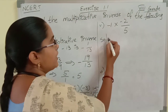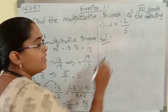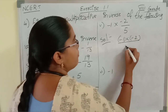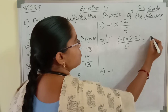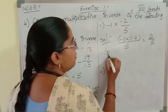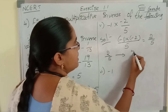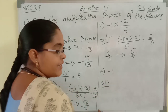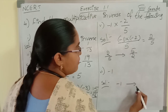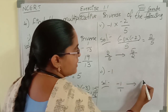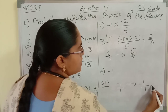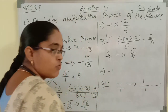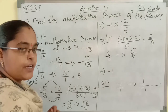Now see the next one: multiply minus 1 and minus 2 by 5. Minus into minus gives plus 2 by 5. The multiplicative inverse of 2 by 5 is 5 by 2. See the last one: the multiplicative inverse of minus 1. Minus 1 is minus 1 by 1, so its reciprocal is 1 by minus 1, which is nothing but minus 1. So the multiplicative inverse of minus 1 is minus 1.